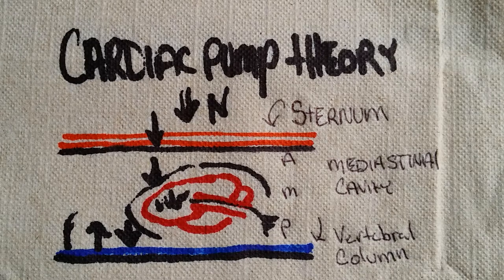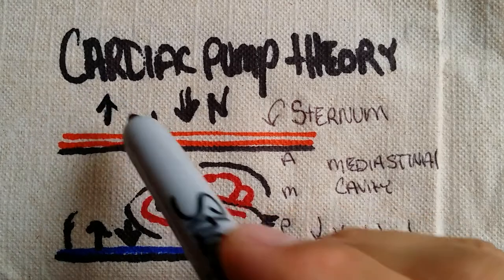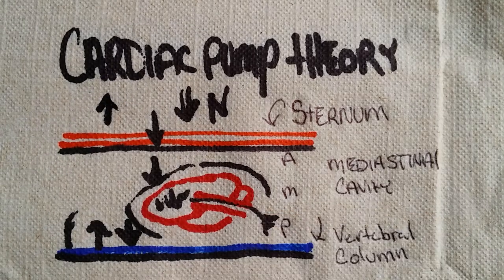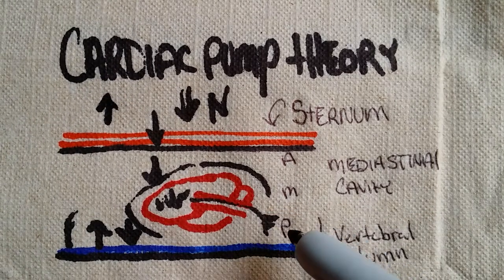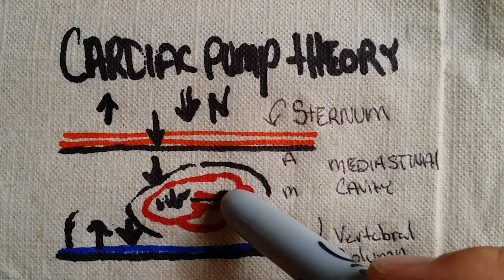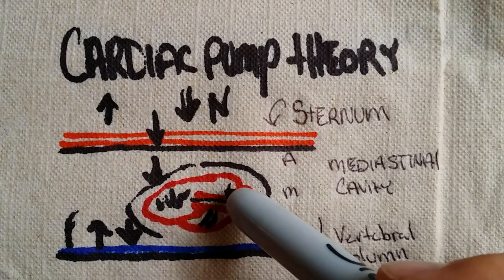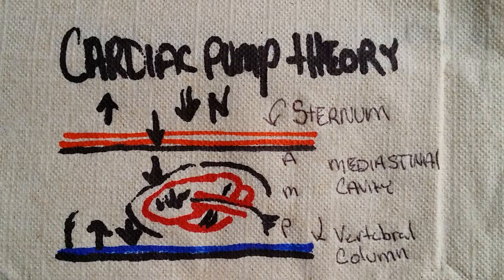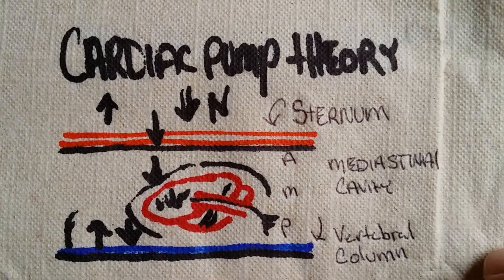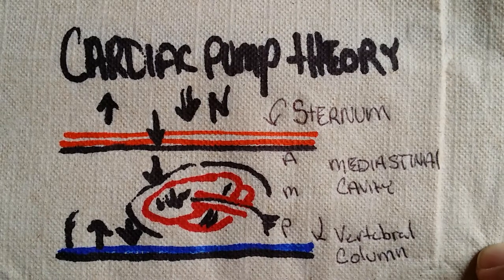You might be asking how the cardiac pump theory perfuses coronary circulation. It does so the same way it normally would. Once we release pressure on the chest and it recoils, we get a little bit of backflow augmentation, and that actually fills the capillary bed in the coronary system. That's how coronary perfusion works under the cardiac pump theory — relatively straightforward to wrap your head around.